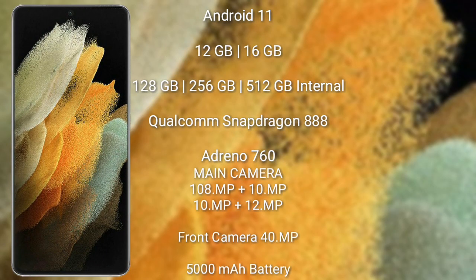Samsung Galaxy S21 Ultra runs on the Android 13 operating system. It comes with 12GB or 16GB RAM, and 128GB, 256GB, or 512GB internal storage, Qualcomm Snapdragon 888 processor, and its GPU is Adreno 660.